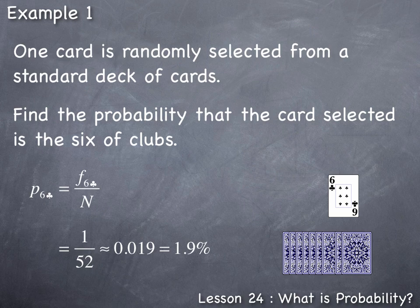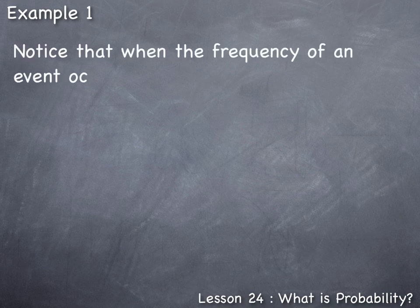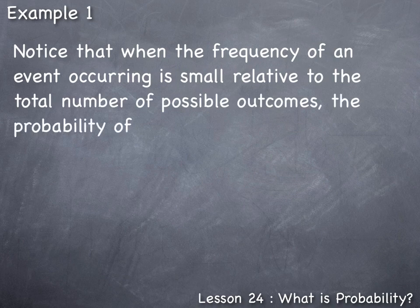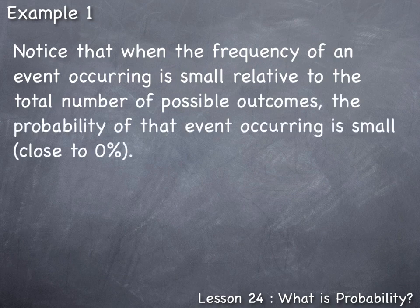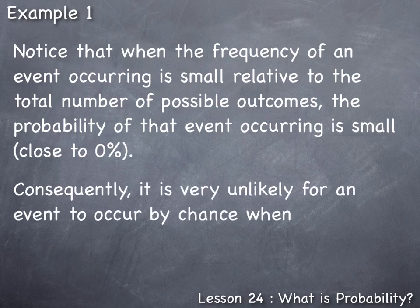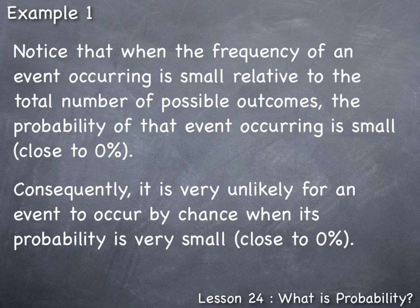Notice that when the frequency of an event occurring is small relative to the total number of possible outcomes, the probability of that event occurring is small — that is, close to zero. Consequently, it is very unlikely for an event to occur by chance when its probability is very small. In this case, randomly selecting a six of clubs out of a standard deck of cards is very unlikely to occur.